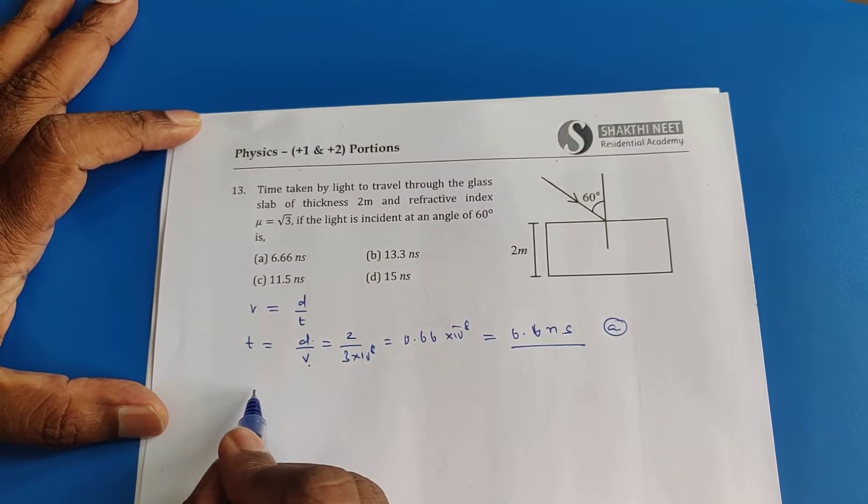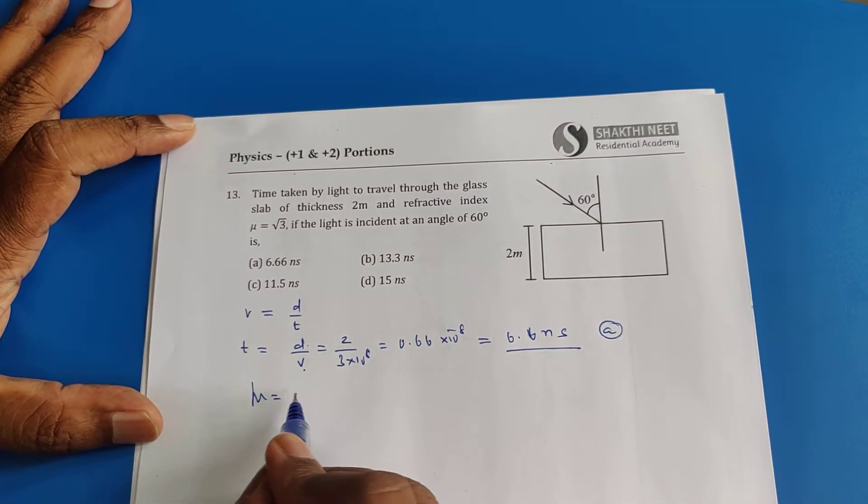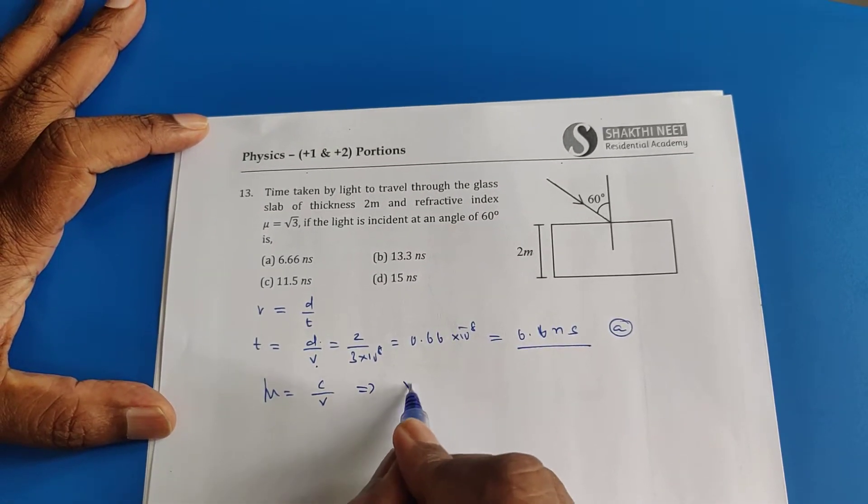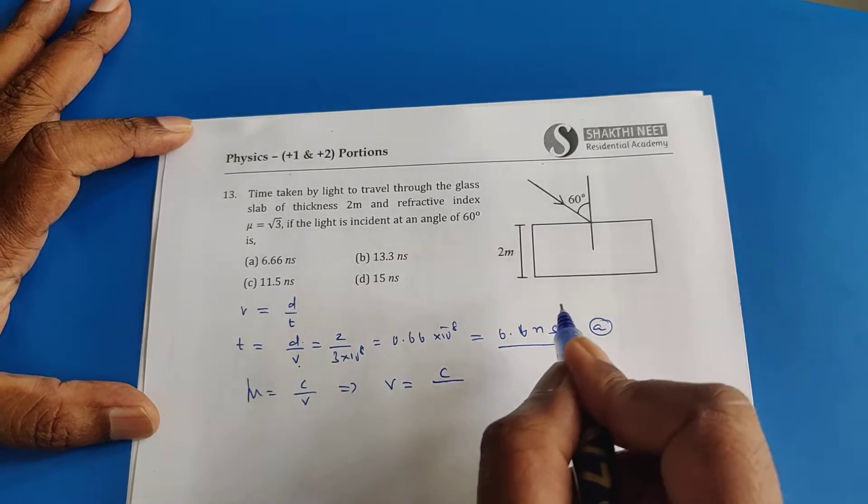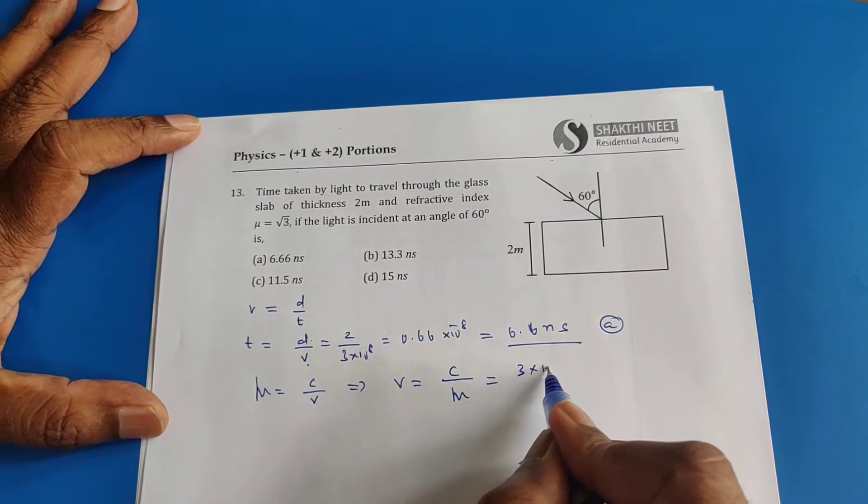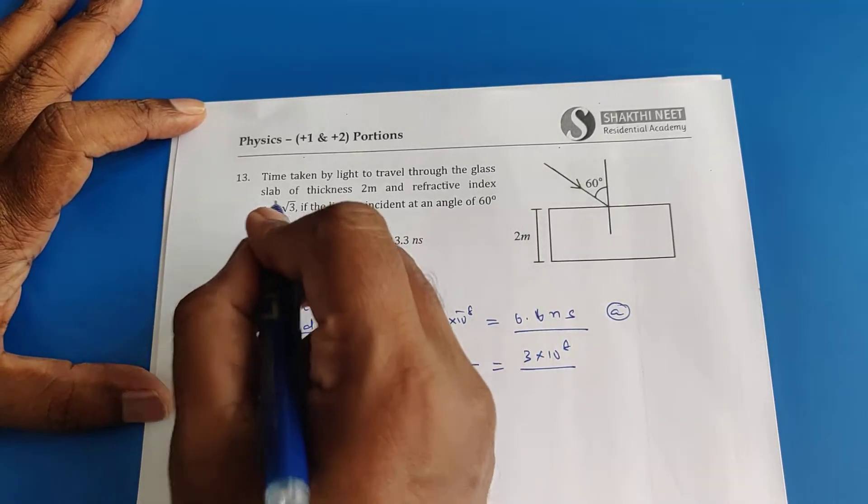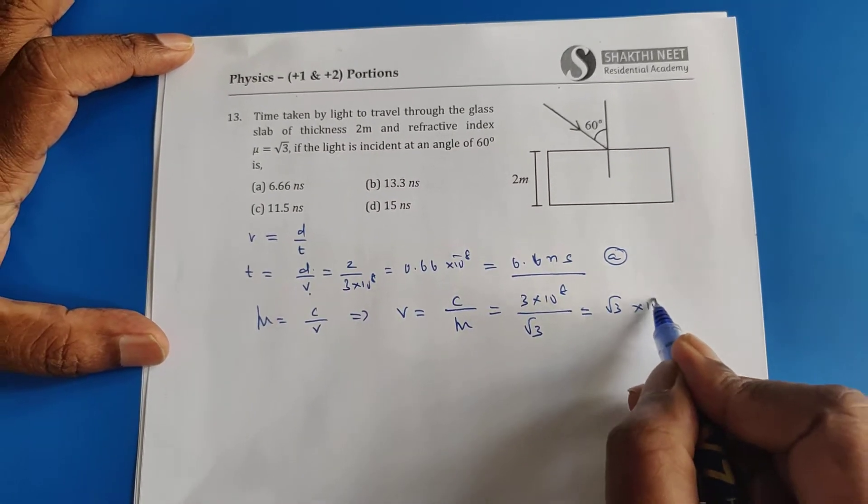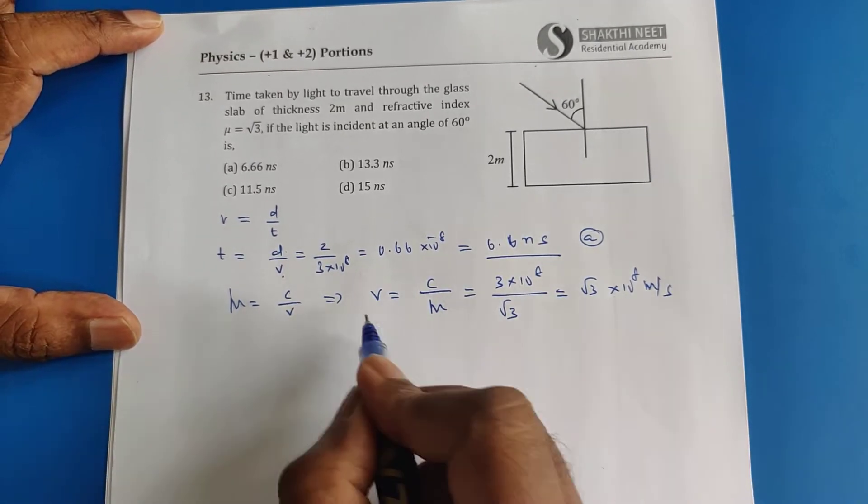What is the velocity actually? Refractive index is defined as μ equals c by v, the ratio of velocities. Therefore, the correct velocity of light inside the glass is 3 into 10 power 8 divided by root 3. It is root 3 into 10 power 8 meter per second. This is the correct velocity.